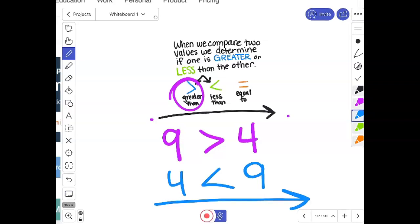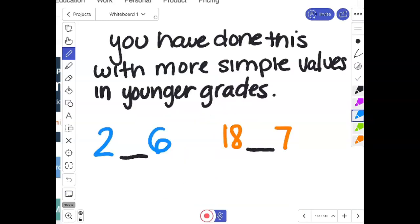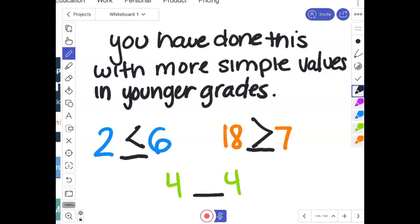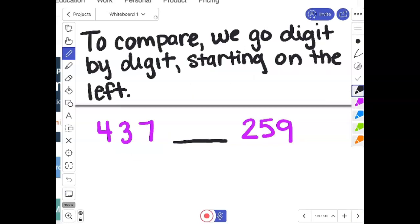So we're going to practice that today. We're going to use these symbols the correct way. We're going to start always reading from left to right. And we're going to use place value to help us do that work. So like I said, we've done this in younger grades with way simpler values. We learned that two is less than six. Like I said, we don't get to read this as six is greater than two, because the two comes first in the equation. Therefore, it is two is less than six. We learned that we could compare two-digit numbers with one-digit numbers. And we know that 18 is greater than seven. We also learned that if it's exactly the same, we would read that as four is equal to four, because it's worth the same. They're equal. We can do this with bigger numbers. We do it going digit by digit, starting on the left side.